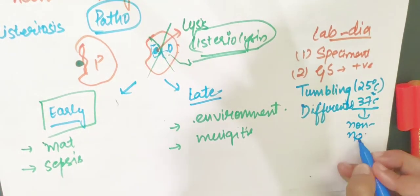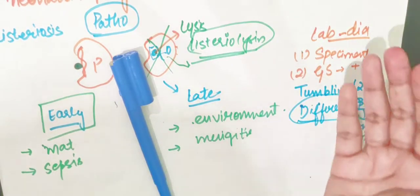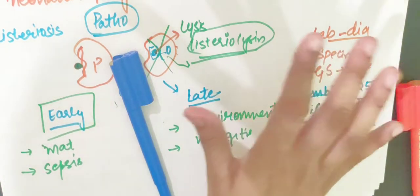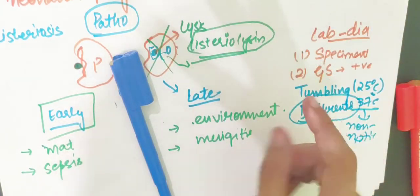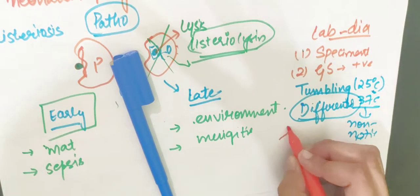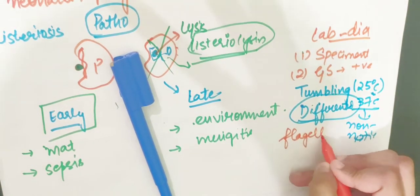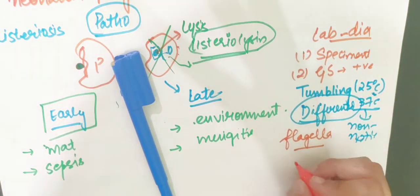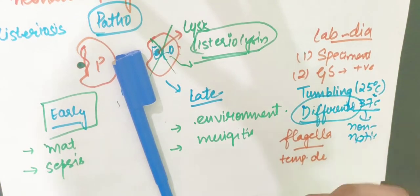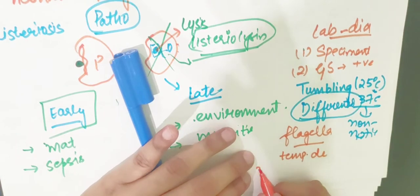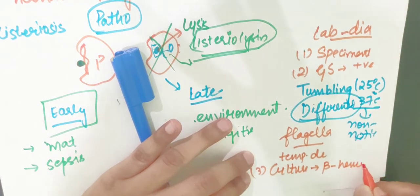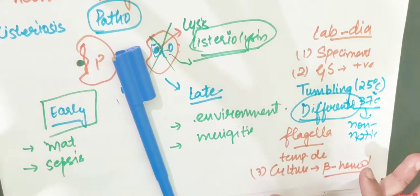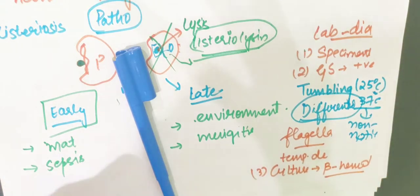On culture using blood agar, Listeria shows beta-hemolysis — complete hemolysis. For biochemical tests, catalase is positive and the CAMP test is positive. If we examine CSF, the pressure will be high and protein and lymphocytes will be increased.